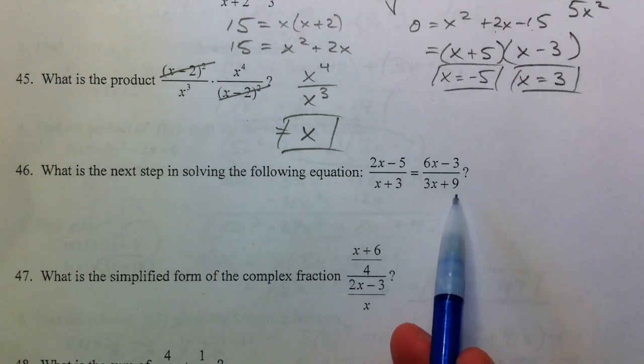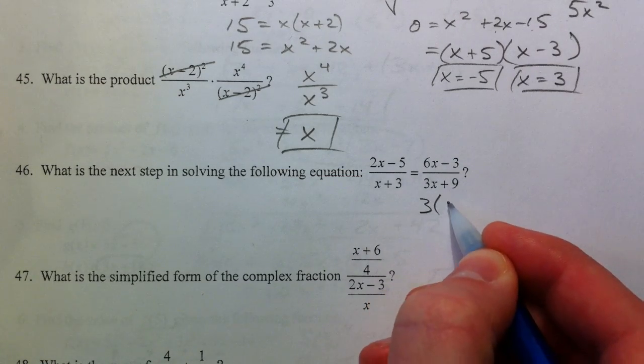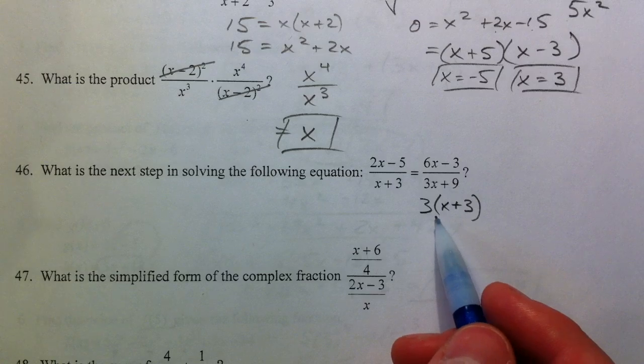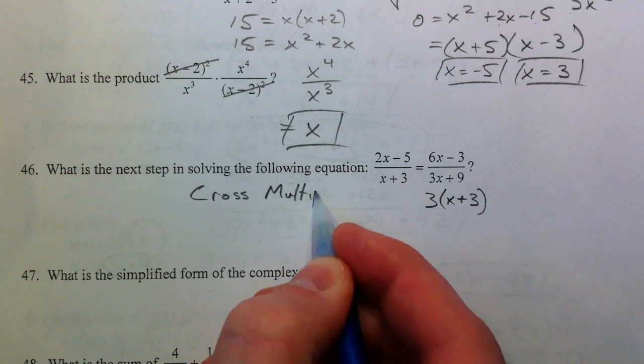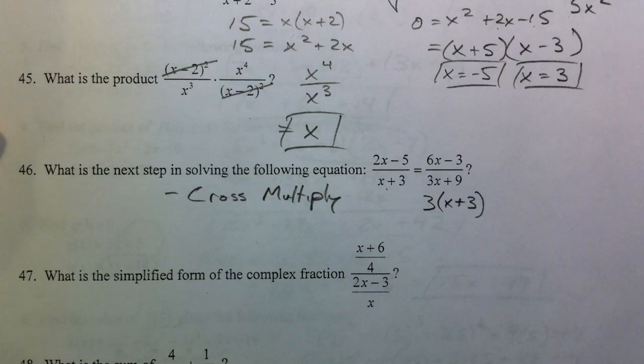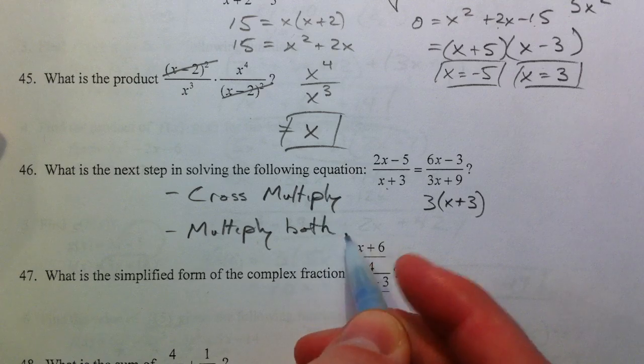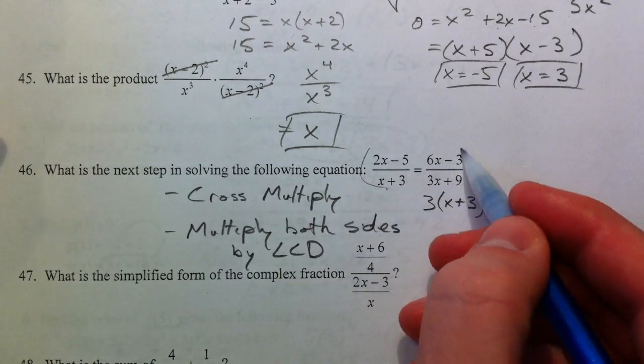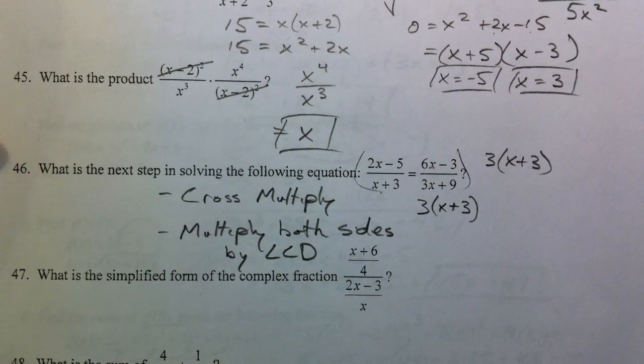In 44, we had a fraction equal to a fraction. And so your next step would be either one of two things. The easiest step would be to just cross multiply. However, we also talked about another method. So one step would be to cross multiply. But we also talked about another method where, see how it's X plus 3 and 3 times X plus 3. If you multiply by common denominator, multiply both sides, lowest common denominator. So if you multiply both sides by 3 times X plus 3, it does essentially the same thing as cross canceling.